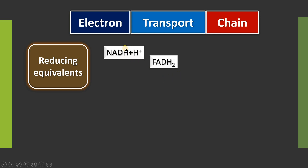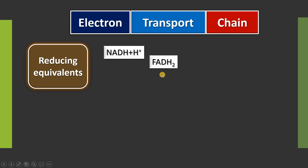One hydrogen atom consists of one electron and one proton, that is H+. Similarly FADH2 also contains protons and electrons. So totally from NADH plus H+, we have two electrons and two protons, and similarly FADH2 also has two protons and two electrons.